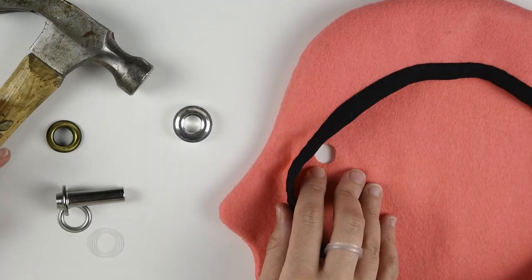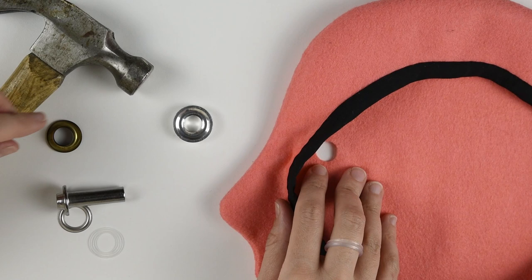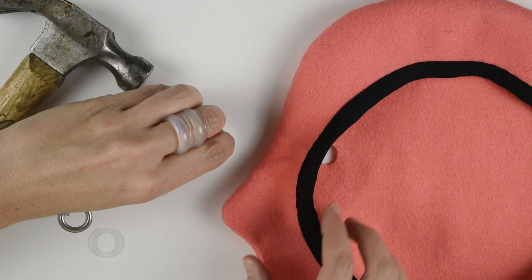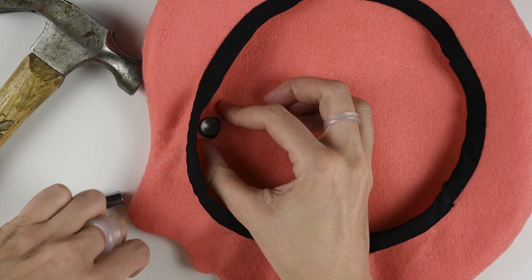To attach the grommet, place the anvil from the kit onto a sturdy work surface with the side with the indentation facing up. Then place the grommet with the black side down into the curved indentation of the anvil. Next slide your hat onto the grommet with the headband side facing up, followed by the plastic ring with the smooth side facing up, and then the metal washer with the domed side facing up.